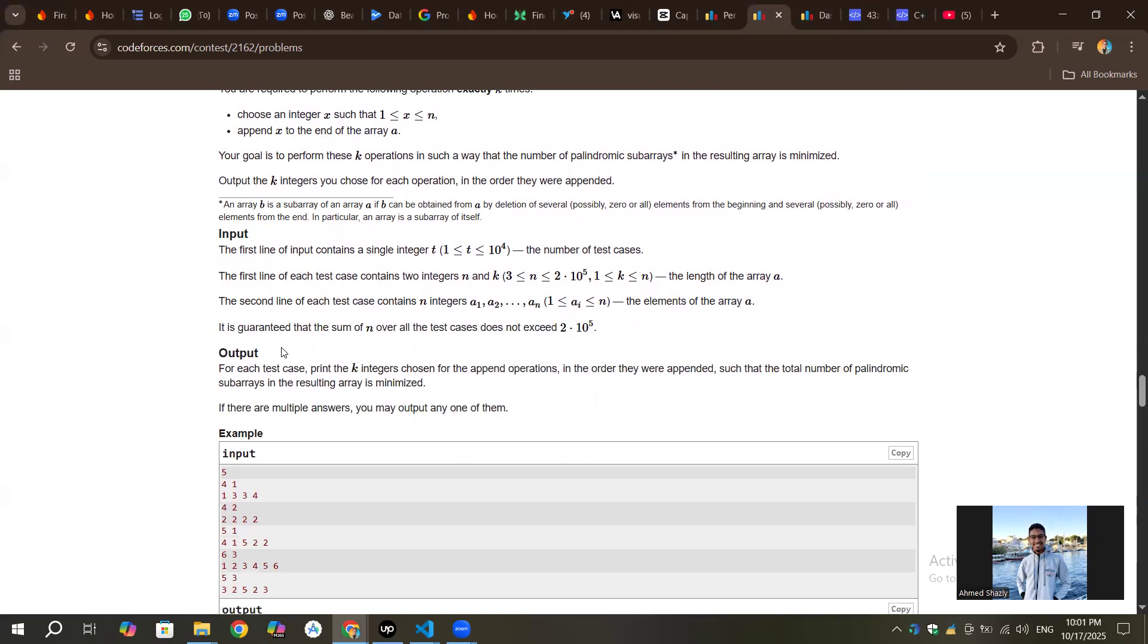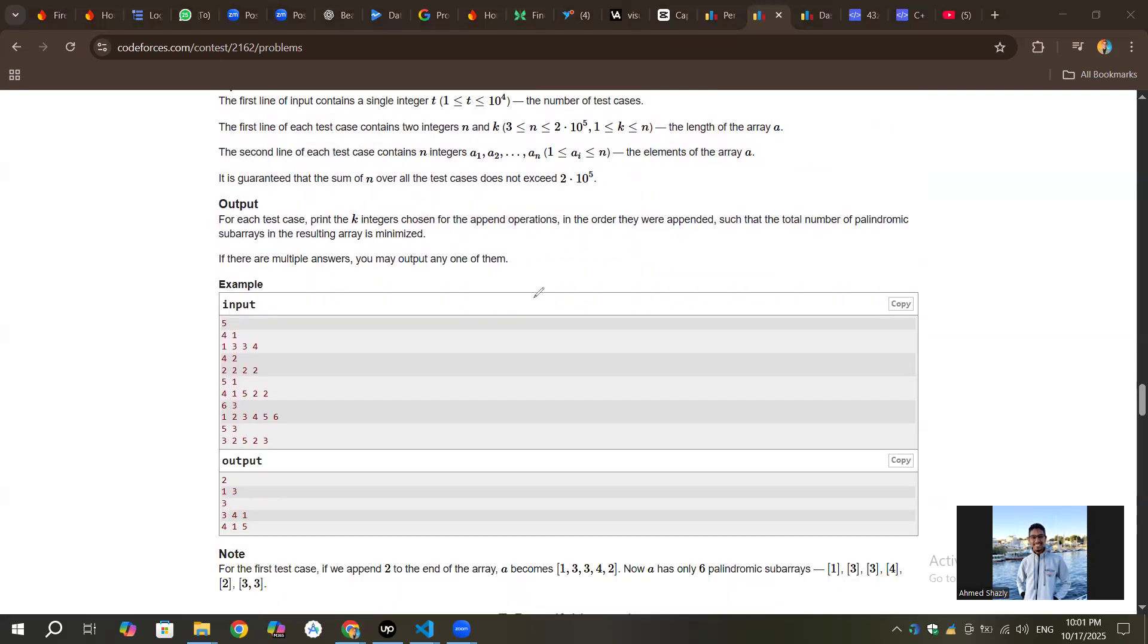Let's try to see what would happen in this example: 1, 3, 3, and 4. We want to add only one element. What would happen if I added 1? It's safe. What if I added 2? It's safe. But what if I added 3? Not safe, right? Why?